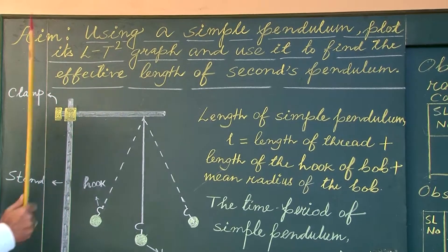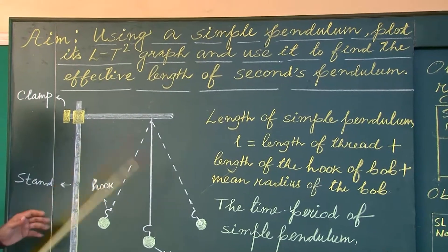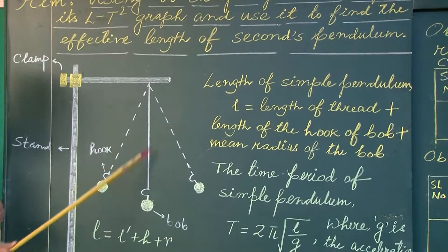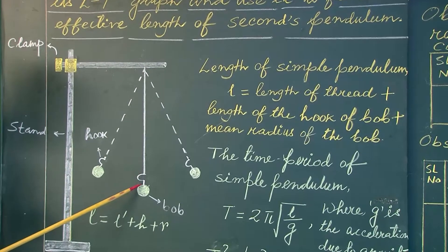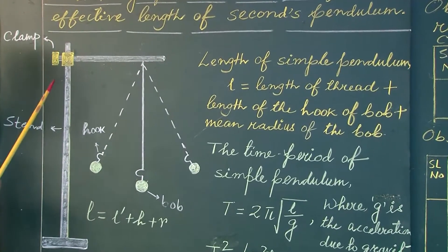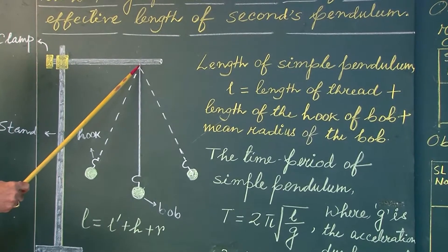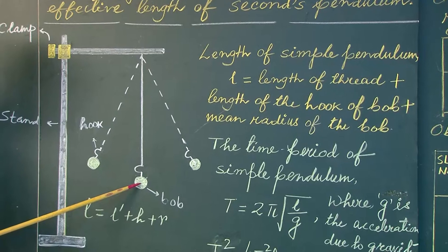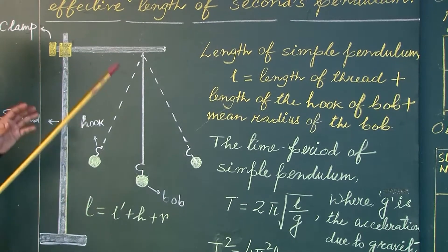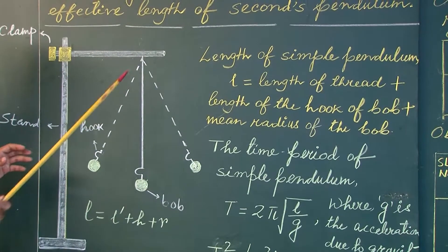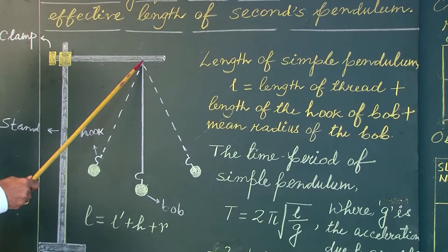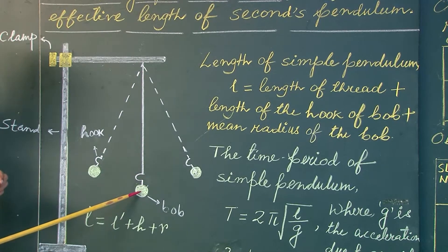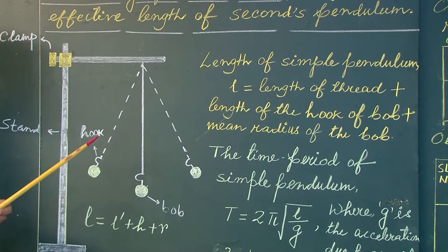What is effective length? If you see the diagram, you can see a pendulum is hanged by a thread and there is a hook. Effective length is basically the distance between the suspension point to the center of gravity of the bob. The total distance between the pivot point and the center of gravity of this pendulum is called effective length.